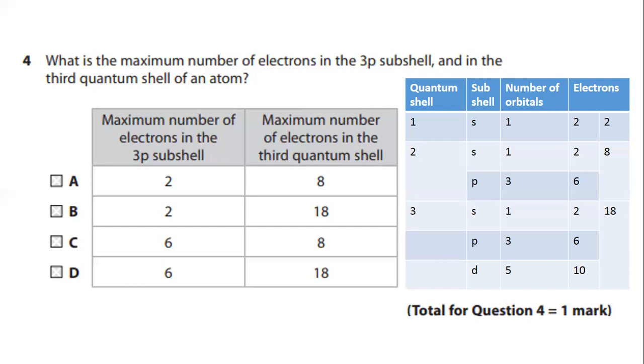So we will look at the answers. A is wrong because in all the P subshells there is a maximum of 6 electrons can be occupied. So you can reject A and B answers.